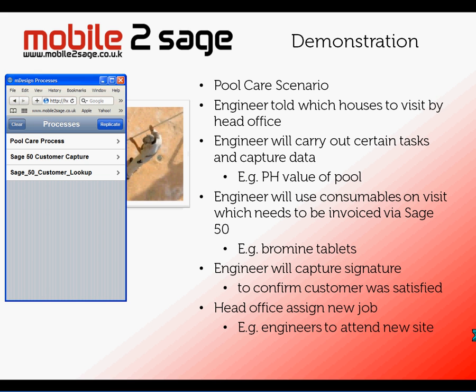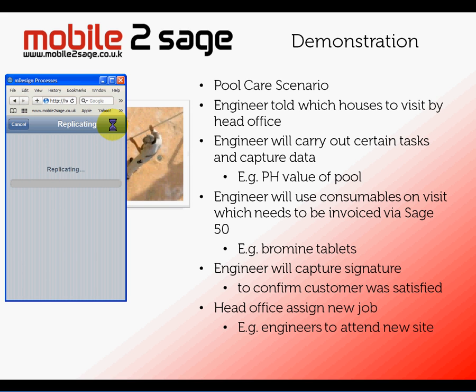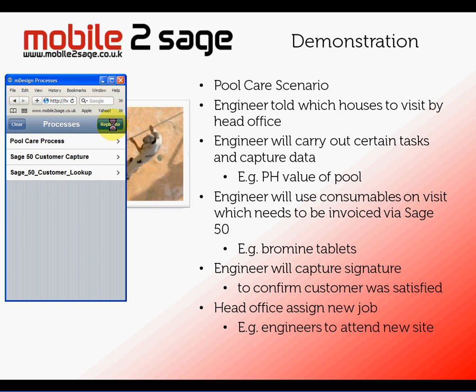Here's Safari showing the business processes that the engineer has access to — in this case he has three: the pool care system, customer capture, and customer lookup. Looking at the pool care system, he doesn't currently have a job associated with him. So using the back office system I'll assign him one, and he can replicate at the start of the day or end of the day when he wants to push data back up — and that's all user definable. Let's go and see if he's been associated with anything. Yes, he's been allocated a job to go and see Malcolm Leverett at Wander Street.